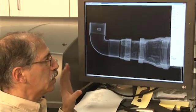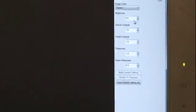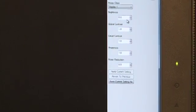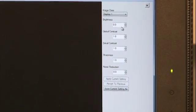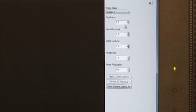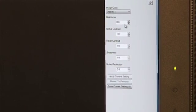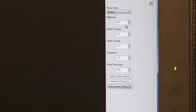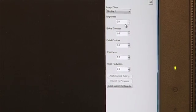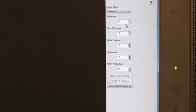It's brightness, the global contrast or latitude of the image, the detail contrast which enhances the contrast at a very small level, which is more like a sharpness enhancement, and then there's a separate sharpness enhancement which is a very basic sharpening tool, and then there's a noise reduction button.